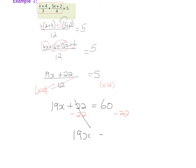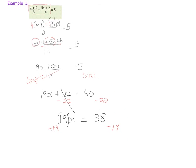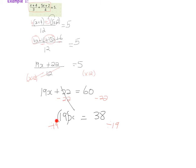I'm left with 19x equals 60 minus 22, which is 38. I'm not looking for 19x, I'm looking for x. Since 19x really means 19 multiplied by x, to get rid of the multiplied by 19 I need to divide by 19, and what I do to one side I must do to the other.